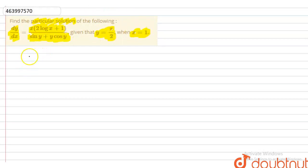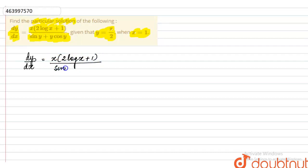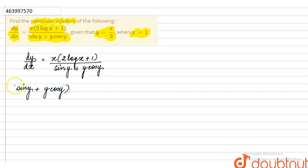So first we have the differential equation given: dy/dx = x(2 log x + 1) / (sin y + y cos y). We will separate variables, so we get: (sin y + y cos y) dy = (2x log x + x) dx.